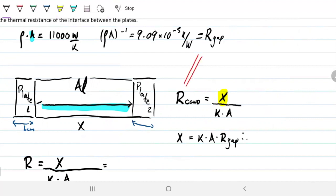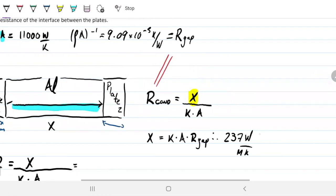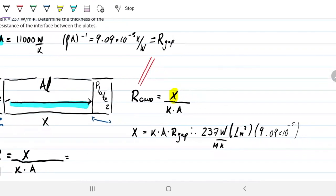So that means that X will be K for aluminum, which is 237, and that is watts per meters Kelvin, times the area through which heat is traveling, that is 1 meter squared, times the resistance of the gap, which is 9.09 times 10 to the minus 5. And this guy here is given in Kelvin per watts.